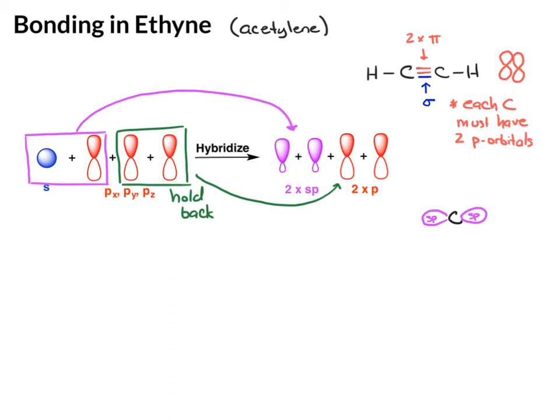Now for the p-orbitals, those go on the carbon and we actually want them to be perpendicular to one another. So I'm going to put one right here and one right here — they're 90 degrees apart. You often hear this termed as orthogonal p-orbitals.